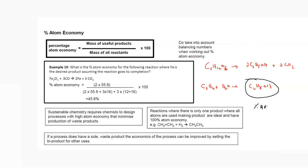The fermentation reaction will have a percentage atom economy less than 100%. The reaction producing only one product (ethanol from ethene + steam) equals 100%, meaning no waste products. But fermentation also produces CO₂, which is not a desirable product, so it has a lower atom economy.